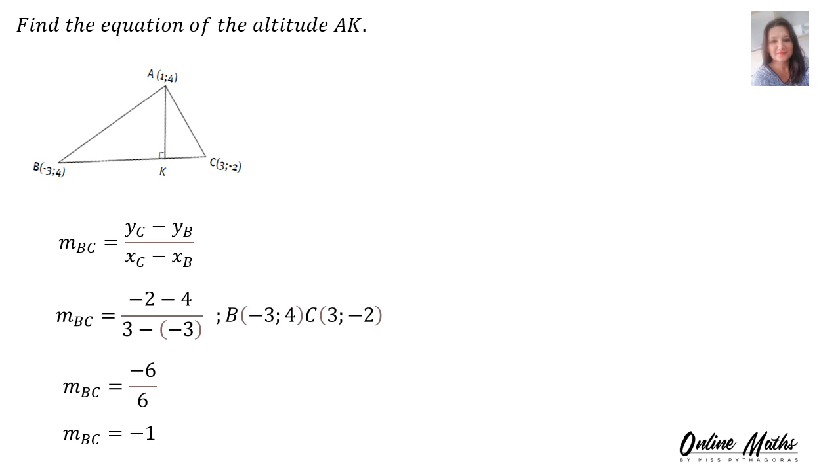But we want the equation of the gradient for AK. So therefore, we need to find the perpendicular gradient. AK is perpendicular to BC. Therefore, the gradient of AK is positive 1.